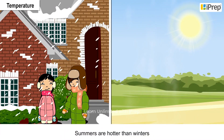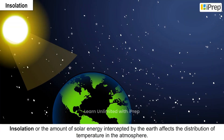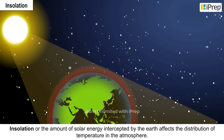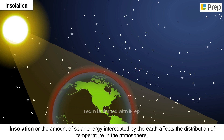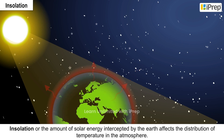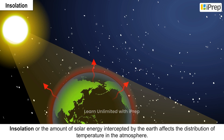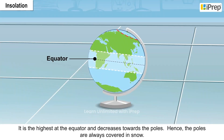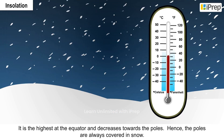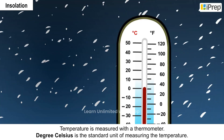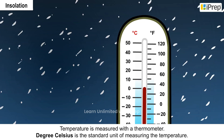Summers are hotter than winters. Insolation, or the amount of solar energy intercepted by the earth, affects the distribution of temperature in the atmosphere. It is the highest at the equator and decreases towards the poles; hence the poles are always covered in snow.